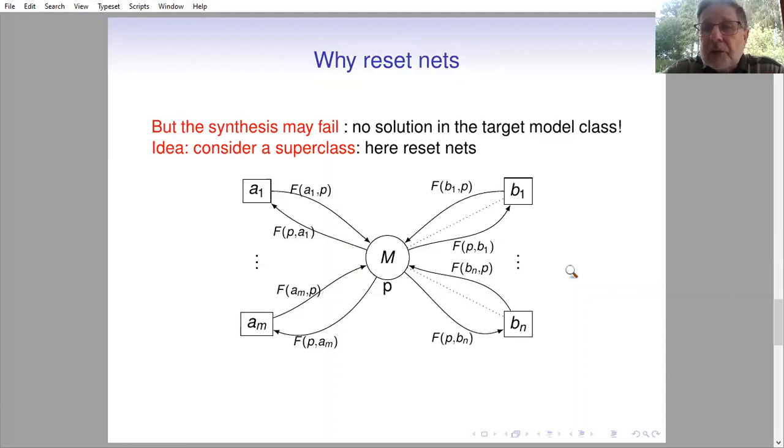And here we considered reset nets, where for some pair of place and transition, when the transition is fired between the absorption of tokens and the production of new ones, the remaining tokens in the place are simply erased. This leads to an interesting theory, but the synthesis is essentially exponential and the implementation is also difficult.